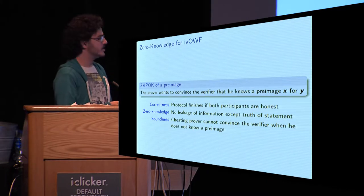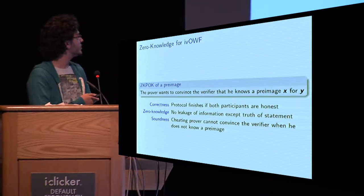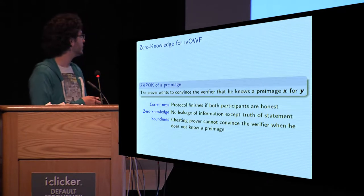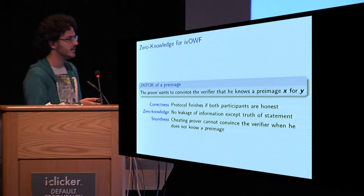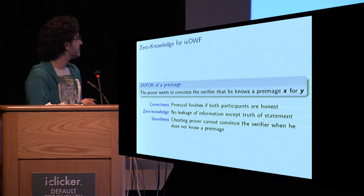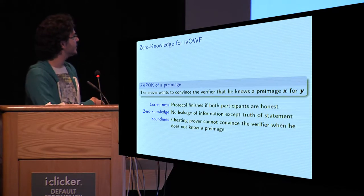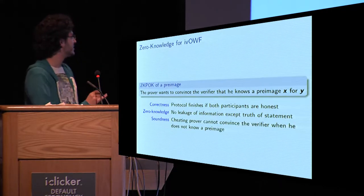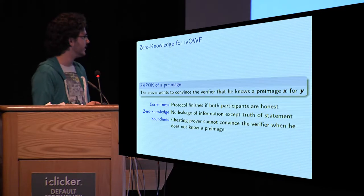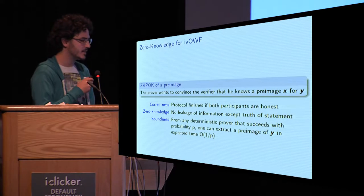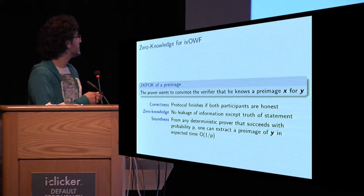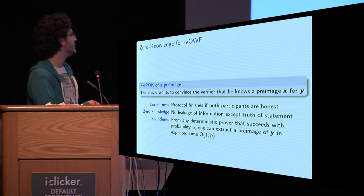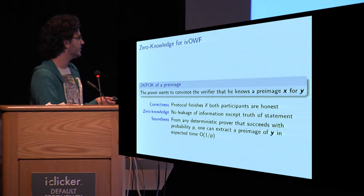Now, what is zero-knowledge? Very simple. A prover wants to convince a verifier that he knows a preimage X for some image Y. We have the usual properties. Correctness states that the protocol should finish if everyone is honest. Zero-knowledge states that no leakage of information should occur except for the truth of this statement. And soundness says that no cheating prover should be able to convince a verifier.